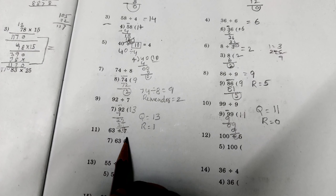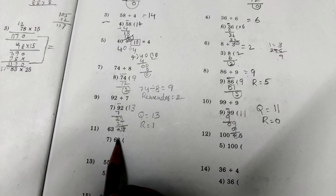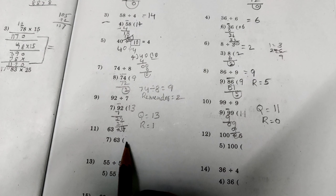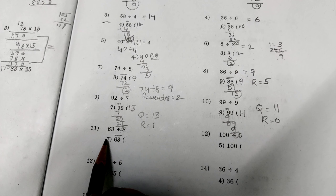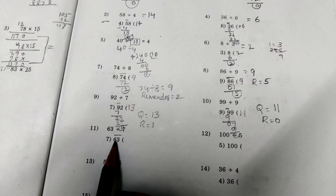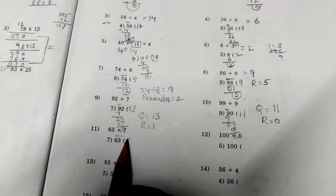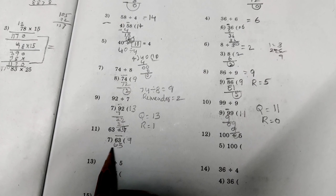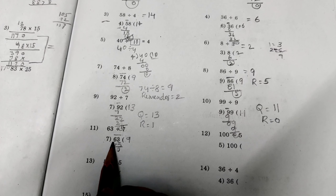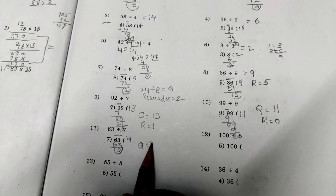63 divided by 7. How many times can we subtract 7 from 63? Let's think about this — how many times? Can anybody tell? Yes, of course. 7 nines are 63. So write 9 in quotient place. 63 minus 63: 3 minus 3 is 0. 6 minus 6 is 0. Here quotient is 9. Answer is 9.